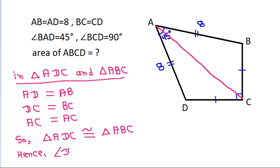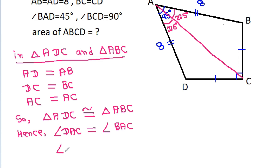Hence, angle DAC will be equal to angle BAC. Since angle DAB is 45 degrees, each of these angles will be 22.5 degrees. Also, angle DCA will be equal to angle BCA, and since angle DCB is 90 degrees, each of these angles will be 45 degrees.